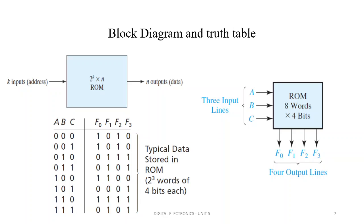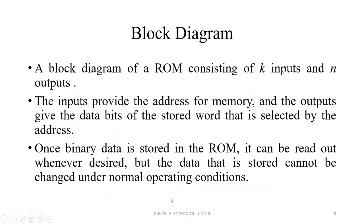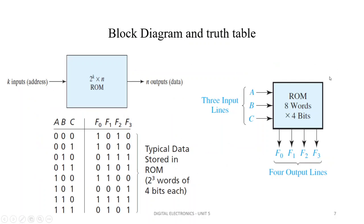This is a block diagram and truth table of ROM. It has K inputs and N outputs. K is the input and N is the output. The basic structure has 3 input lines and 4 output lines. This is the truth table of the ROM — 2 to the power 3 words of 4 bits each, meaning 2³ locations with a word length of 4 bits each.